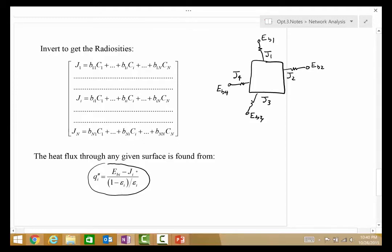So, the heat fluxes, once the radiosities are known and the temperatures had already been specified so that the blackbody emissive power is known, we divide by the surface resistance, and we get the heat flux.